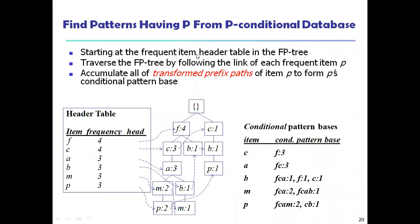You start at the frequent item header table in the FP-tree — this is the header table shown here. The first one is a null set. Traverse the FP-tree by following the link of each pattern item P. Here you can see F with value 4, and C with value 4. Traverse the FP-tree by following the link of each frequent item P, and accumulate all the transformed prefix paths of item P to form P's conditional pattern base.